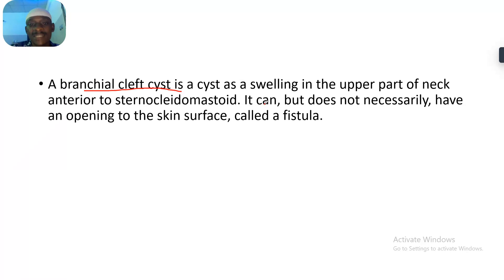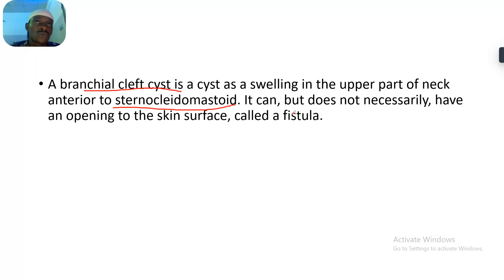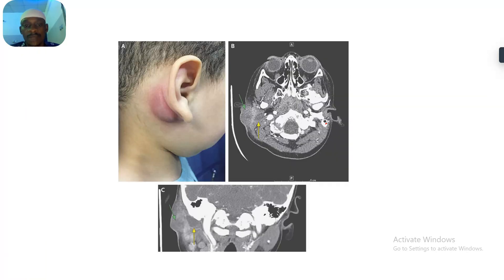The branchial cleft cyst is a cyst — a swelling in the upper part of the neck. It is anterior to the sternocleidomastoid muscle. It can but does not necessarily have an opening to the skin. When it has an opening to the skin, it is called a fistula.